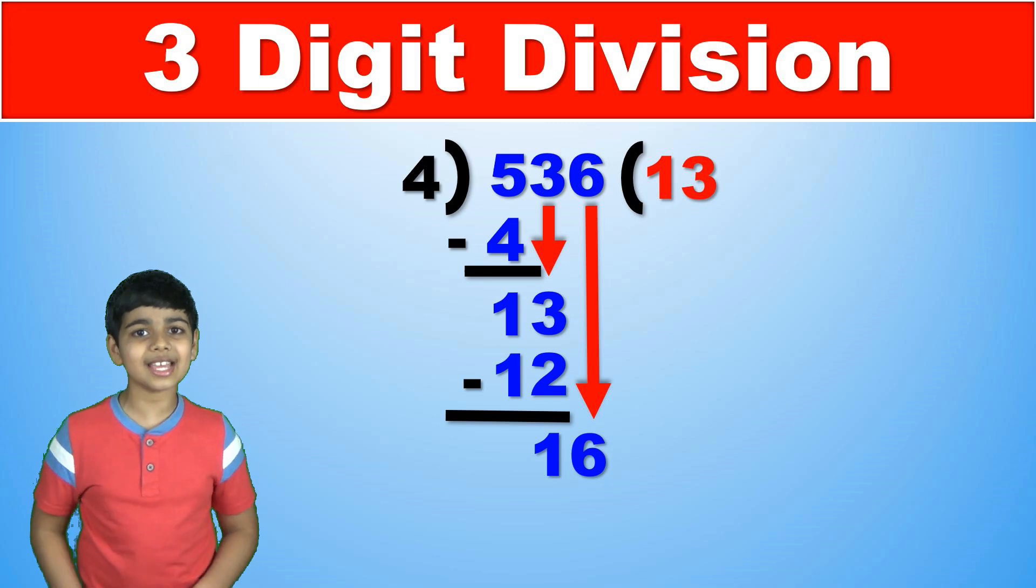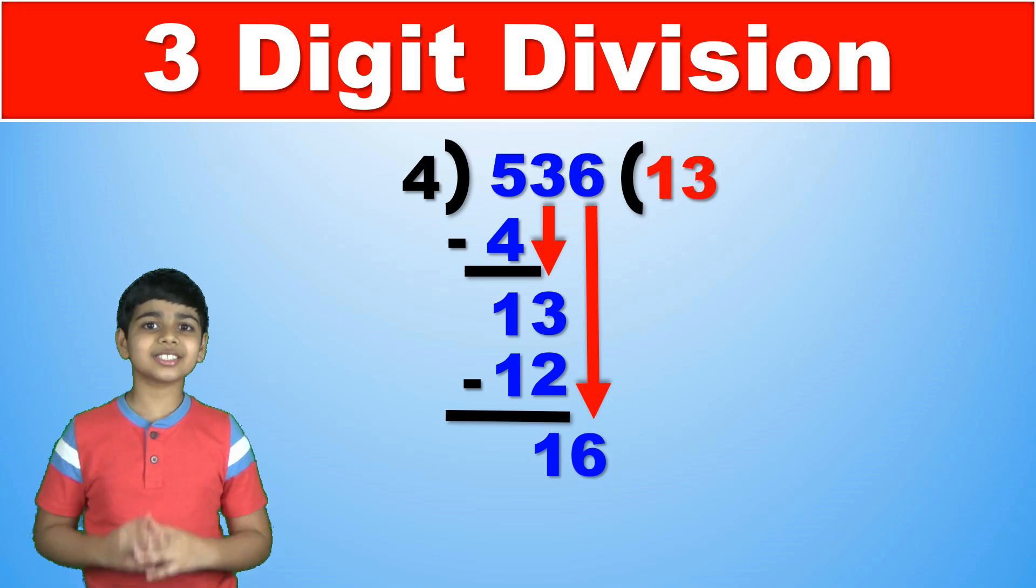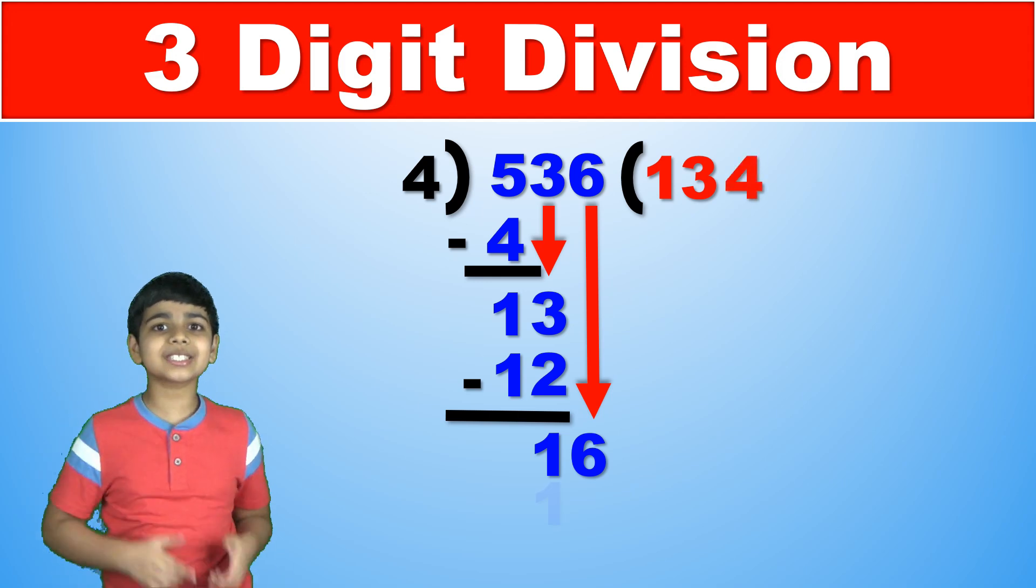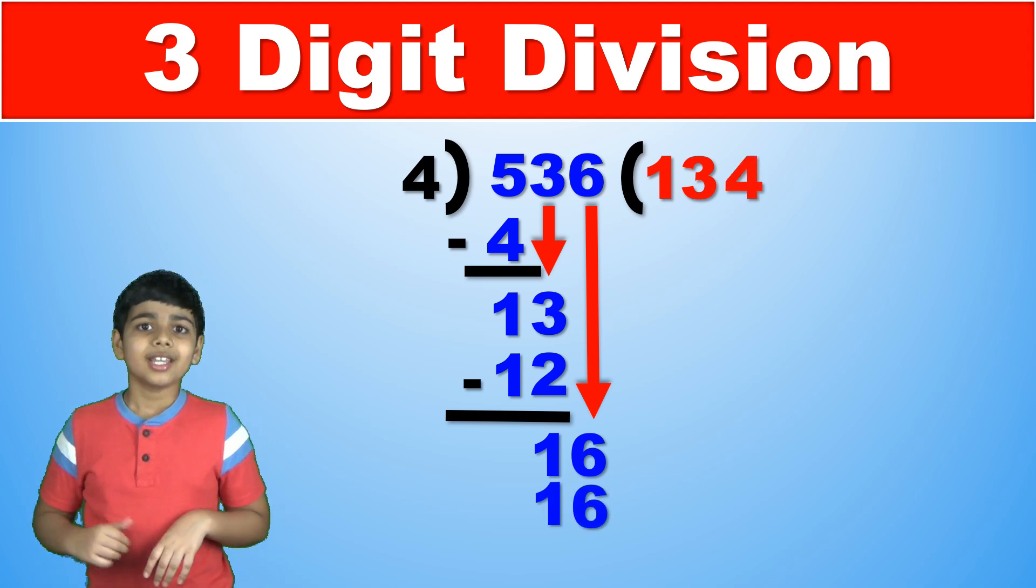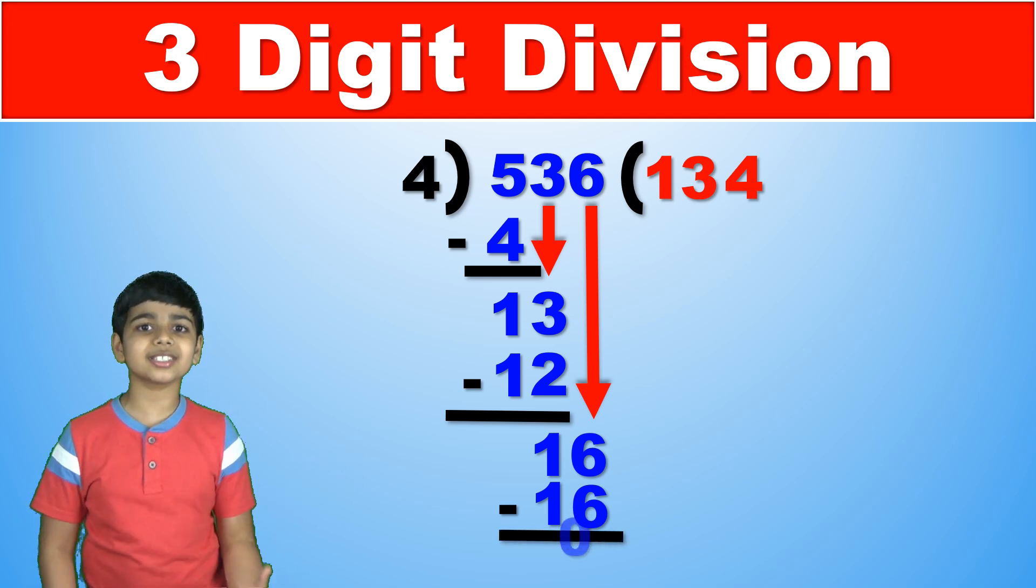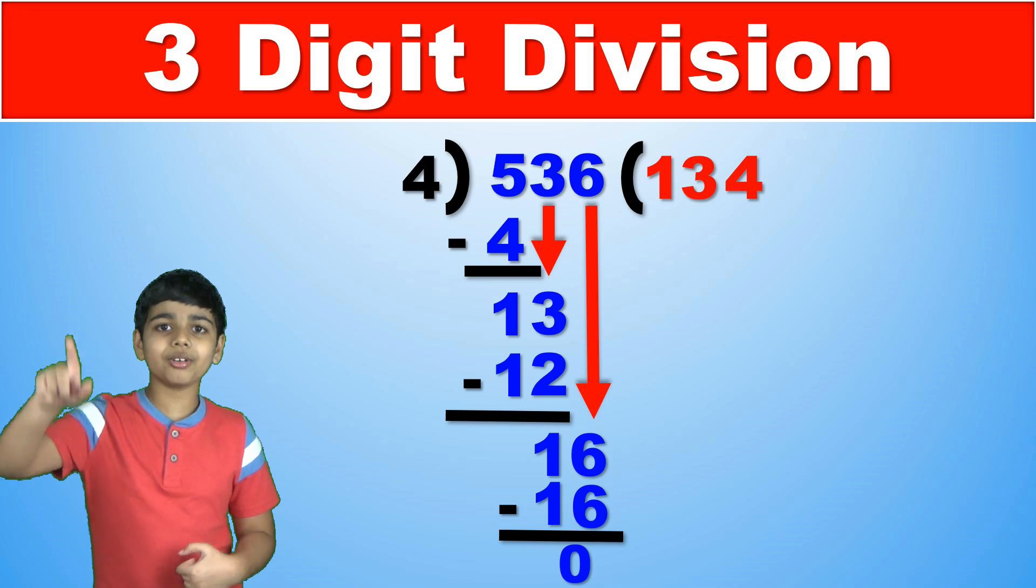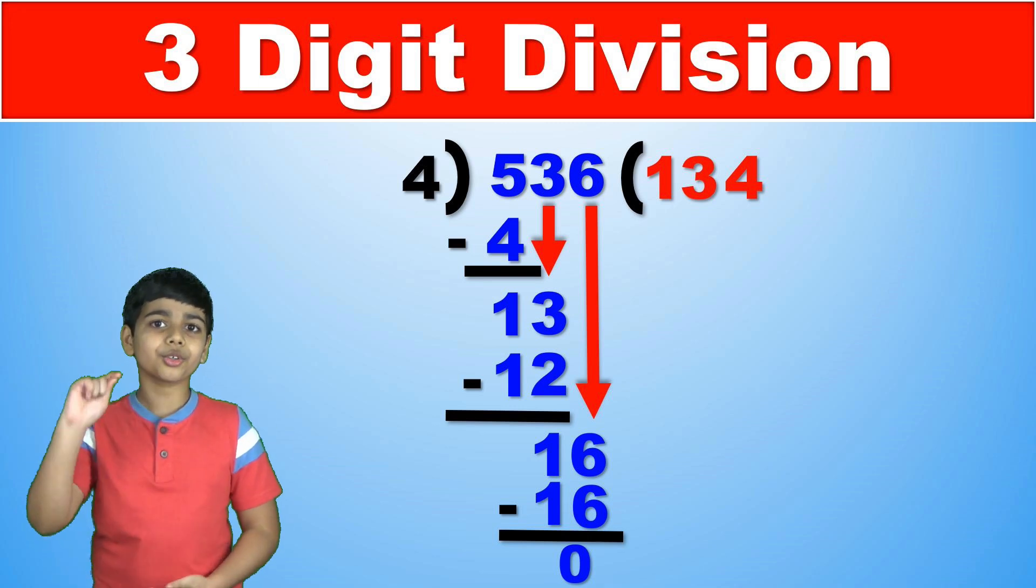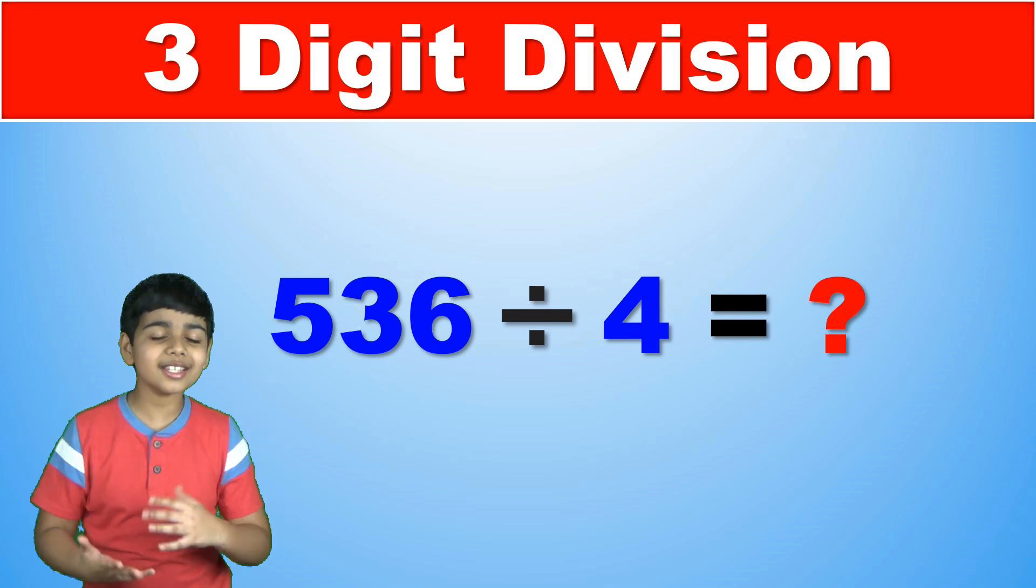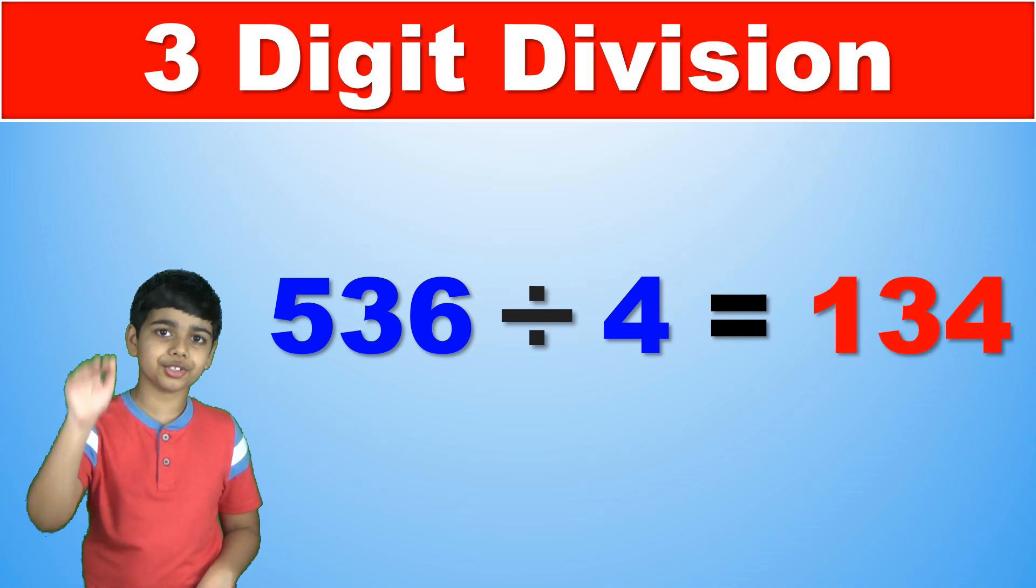And one thing you might notice is that 16 is 4 times 4. So 4 is the last digit of our answer since 4 times 4 is 16. We write that, and 16 minus 16 is 0. Since there are no remaining digits left, 536 divided by 4 is 134.